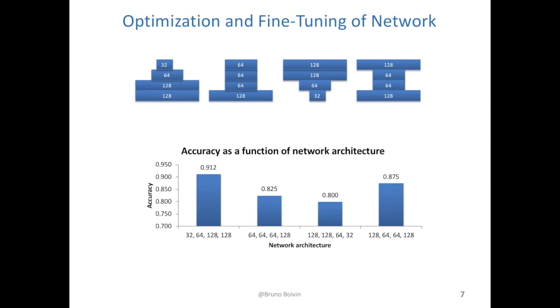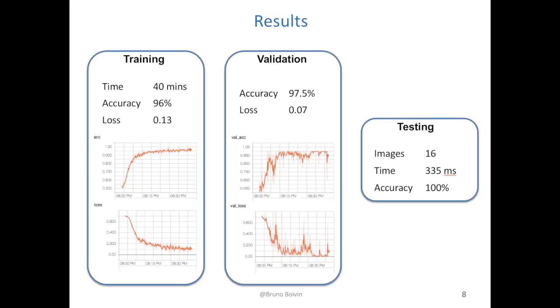The architecture shown on the left yielded the best performance — the one where we start with a small number of filters and increase the number of filters as we go deeper into the network. Now let's talk about the performance of our network.